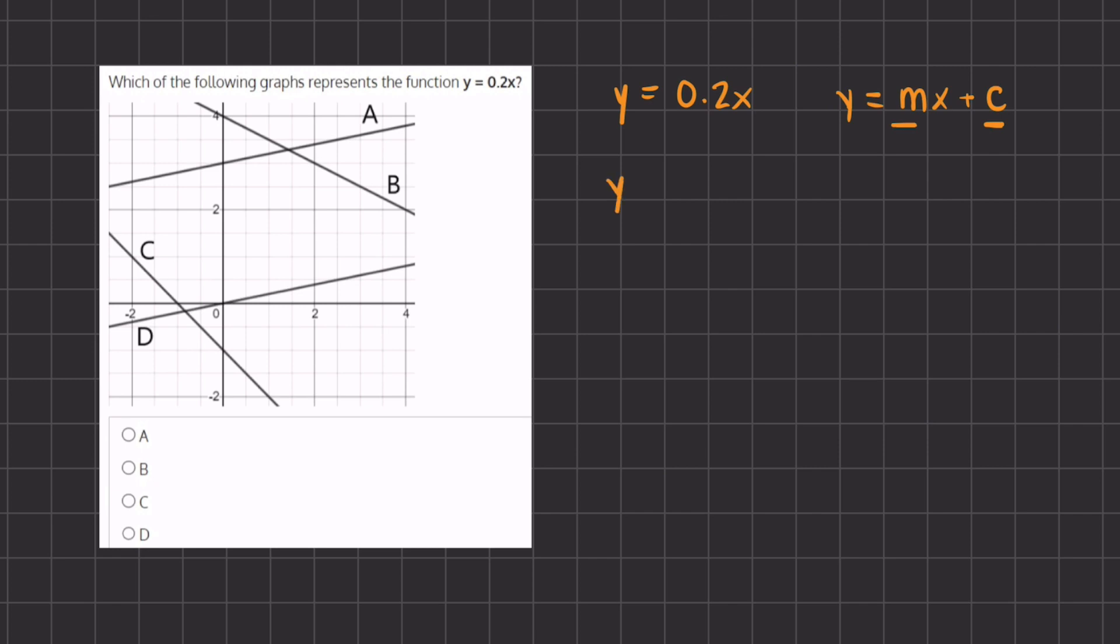Now if we take a look at our function, we have y equals 0.2x plus 0 because it is not written, so our y-intercept should be 0. If we take a look at our graph, we should look at our y-intercept and we can find the 0 right over here.